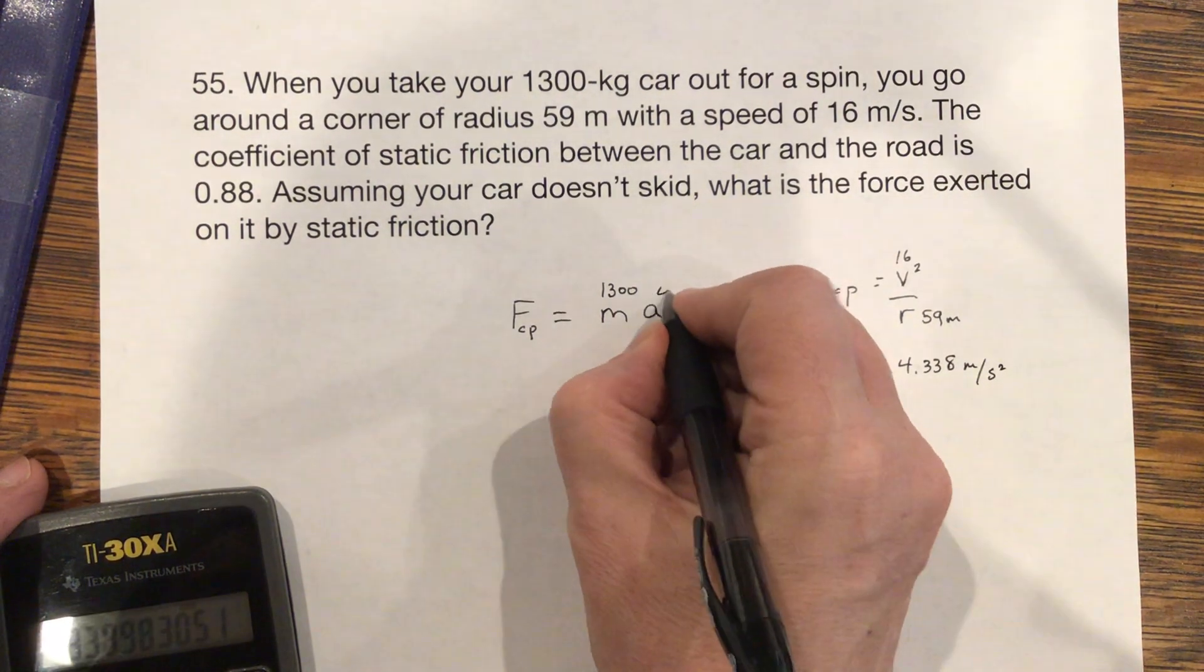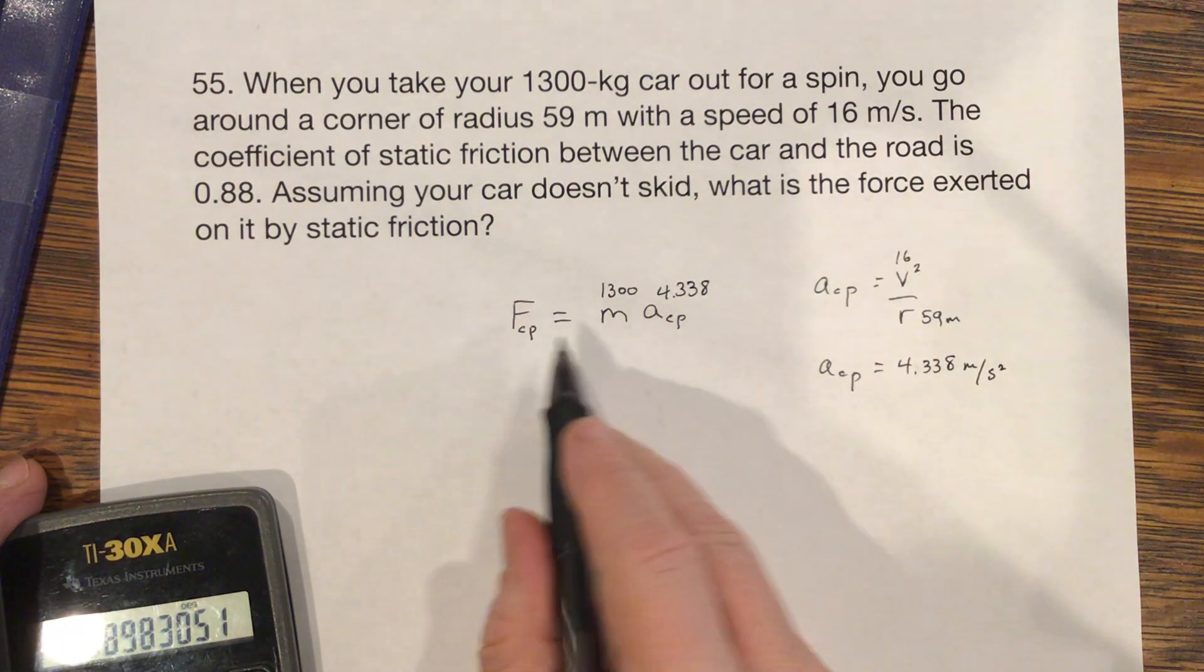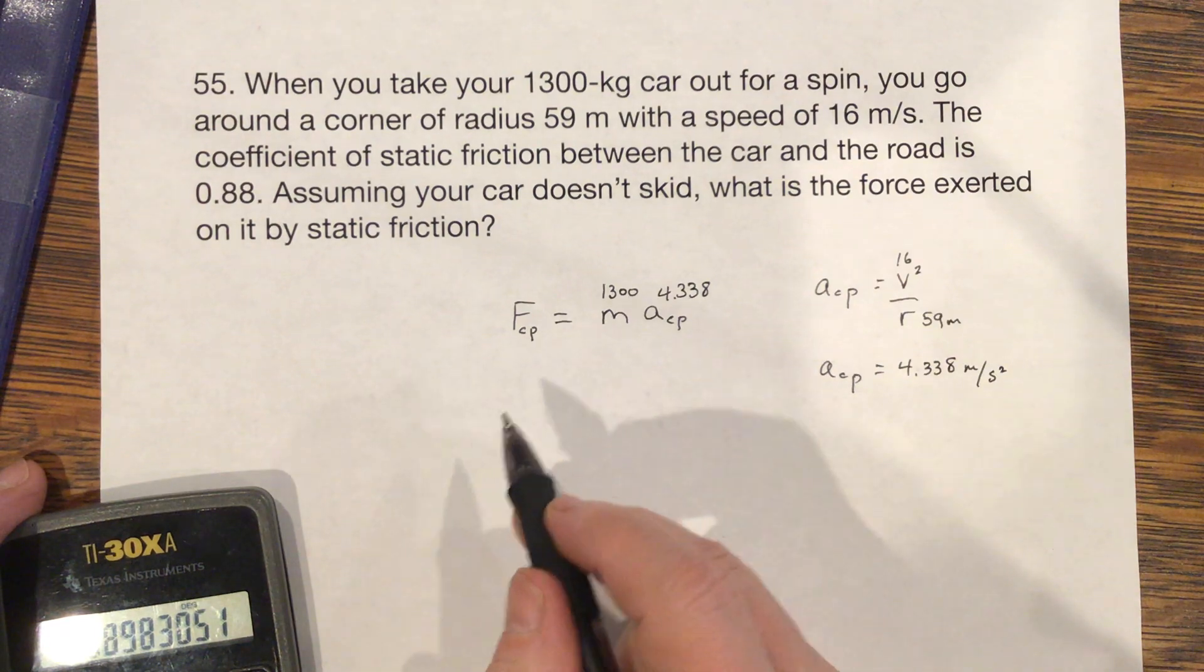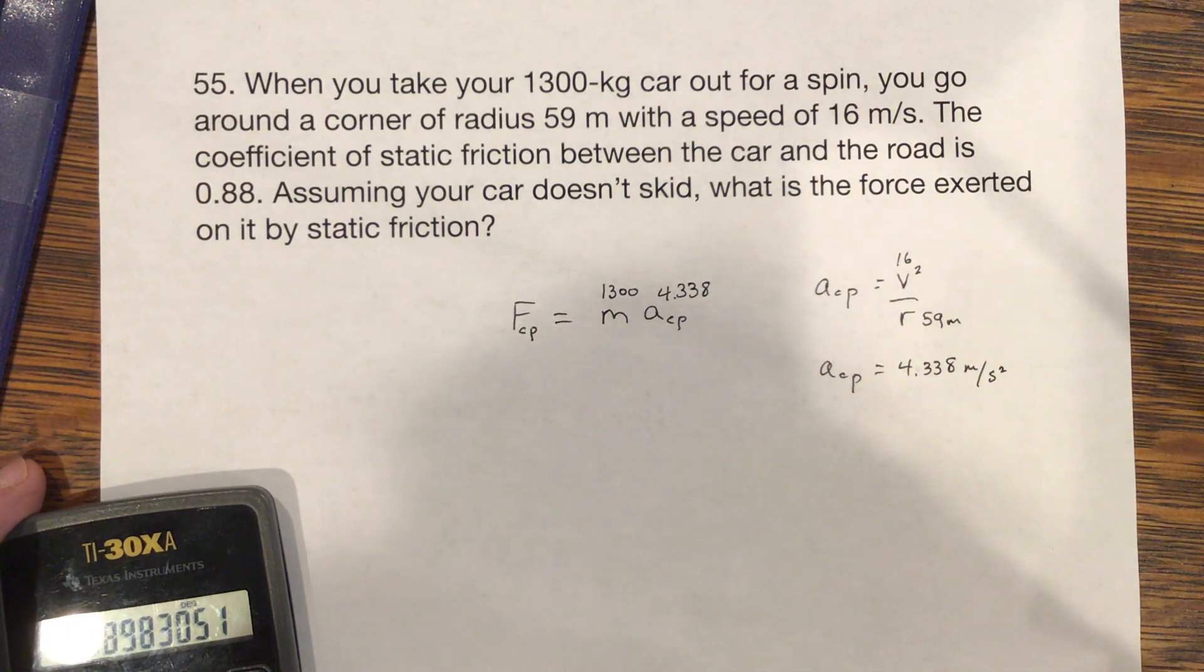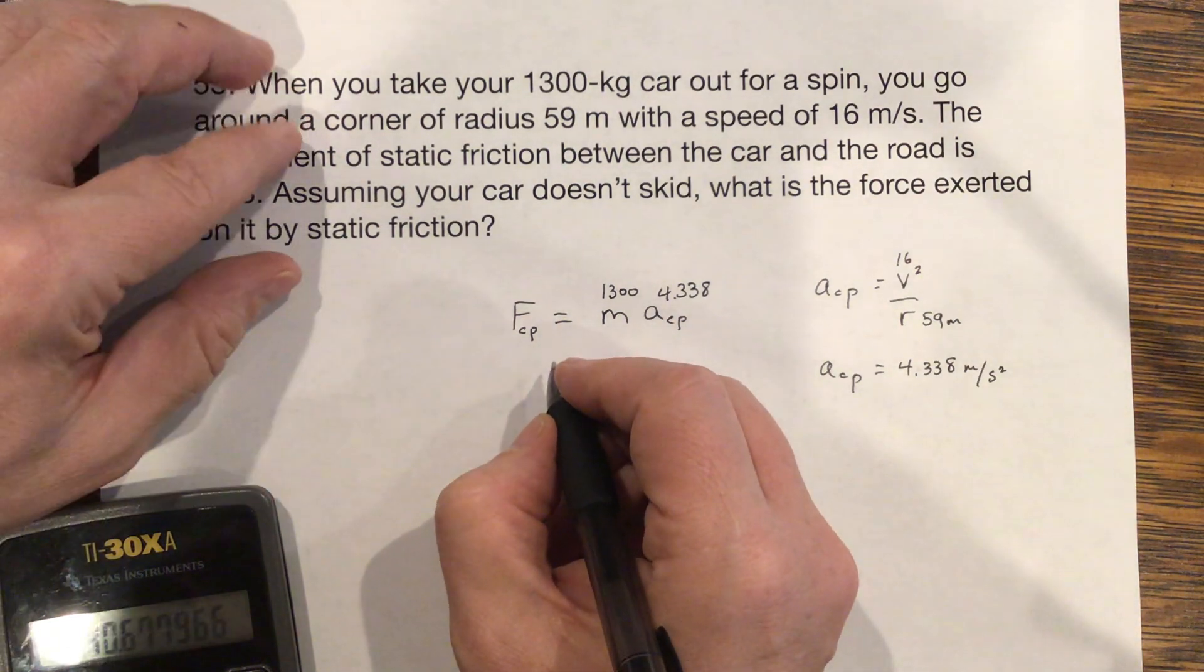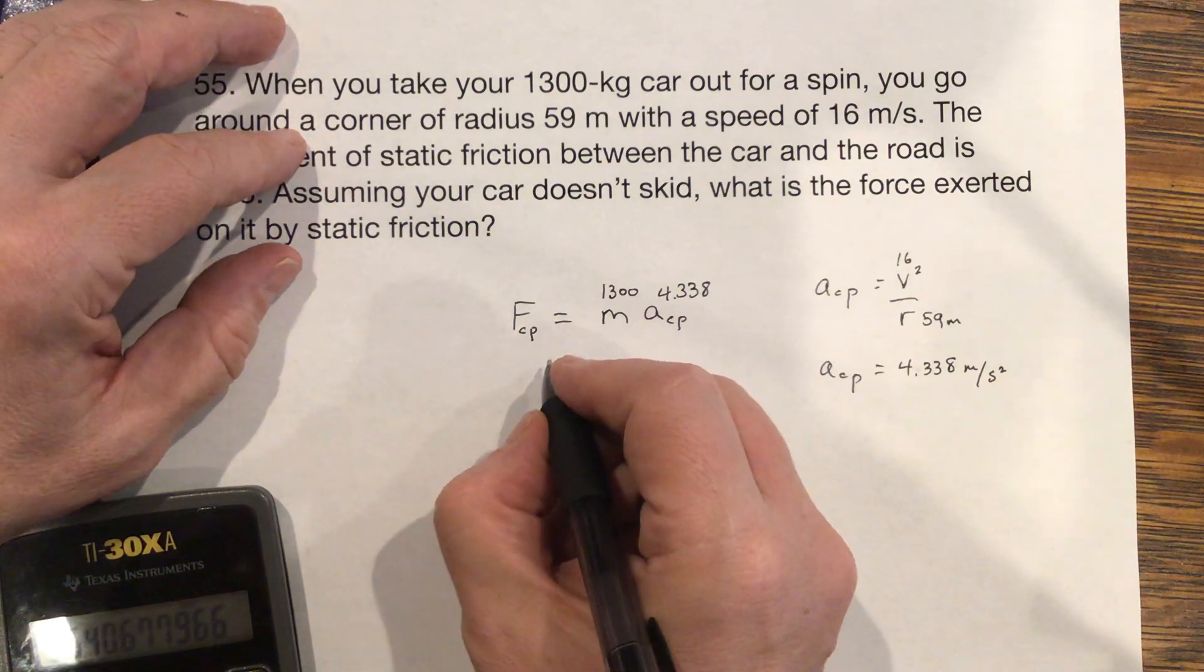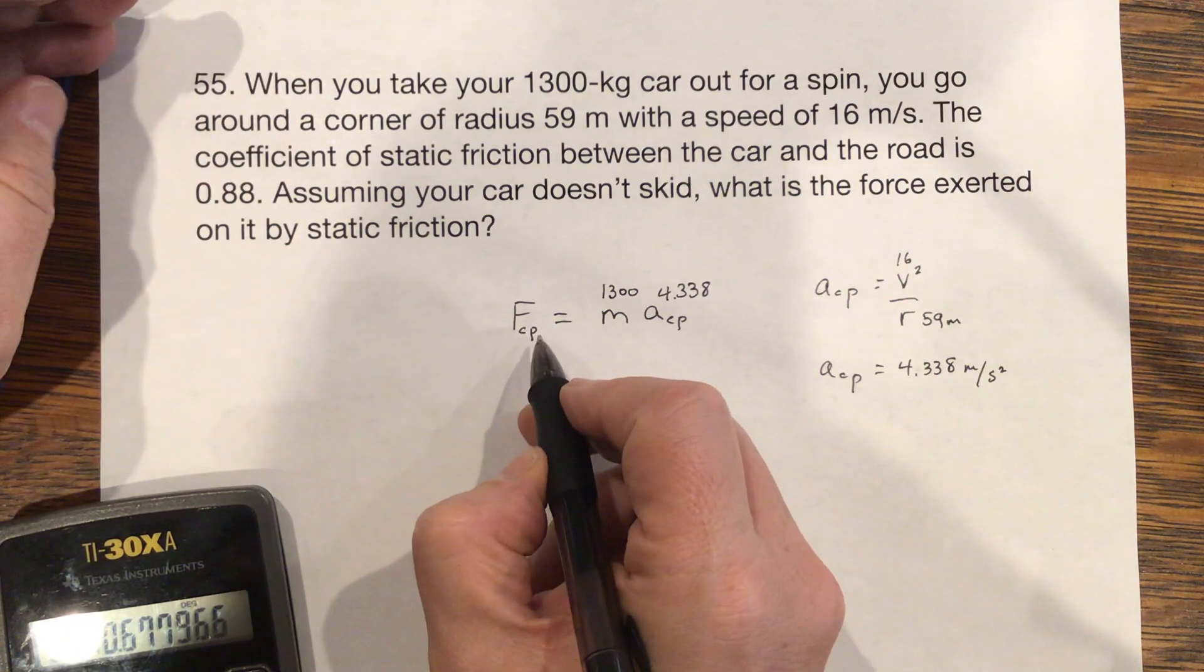That goes here, 4.338. And so I can find the force that's pulling in to the inside of the circle times 1,300. So this is giving you the centripetal force.